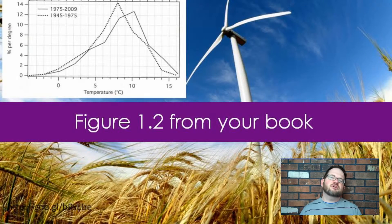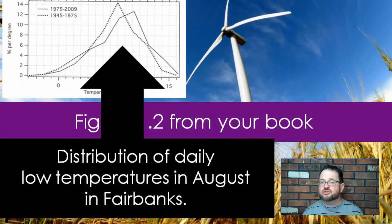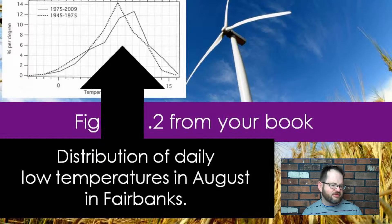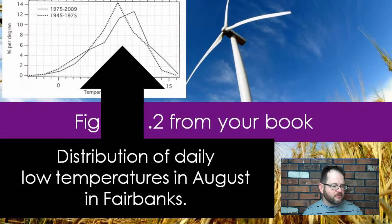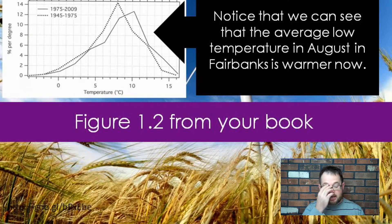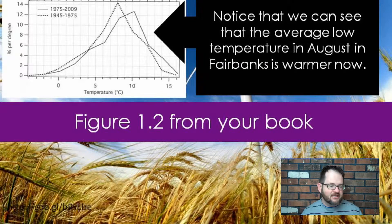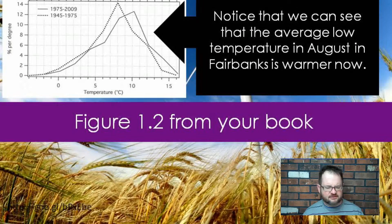In the same way, the book then shows figure 1.2, which is the distribution of daily low temperatures in August in Fairbanks. The dashed curve shows a roughly 30-year period from 1945 to 1975, and the solid curve shows from 1975 to 2009. The lesson here is that the average low temperature in August has gotten warmer between those two 30-year periods — it looks like it increased by a few degrees Celsius. The book gives the exact number; I think it was about 1.6 degrees Celsius.